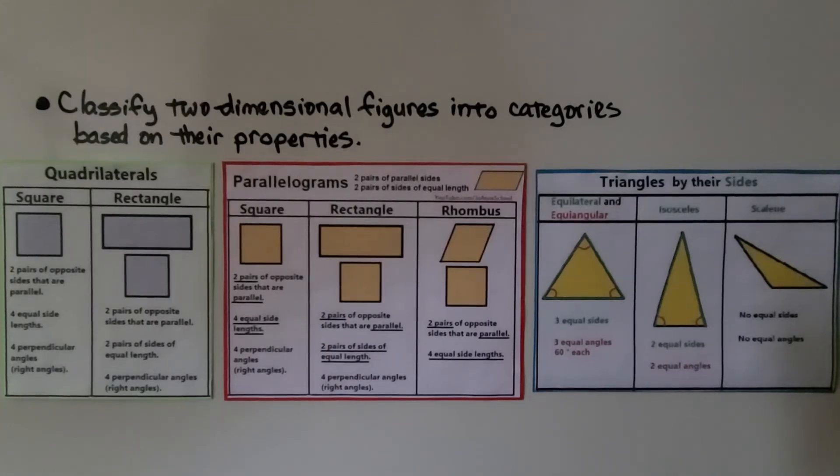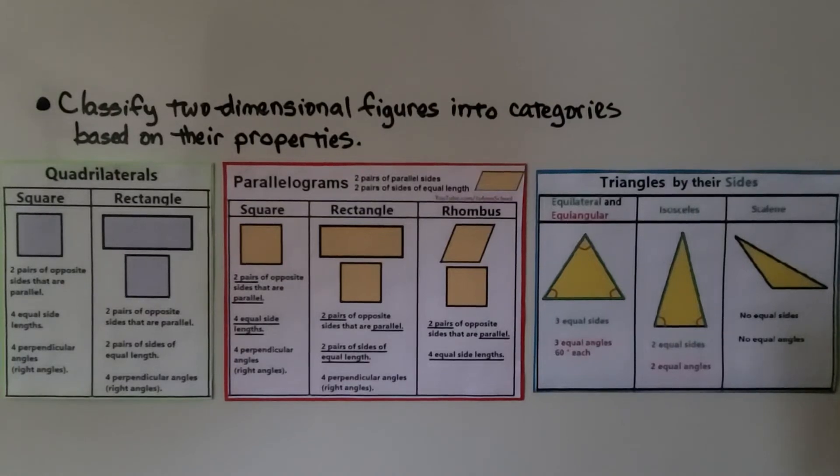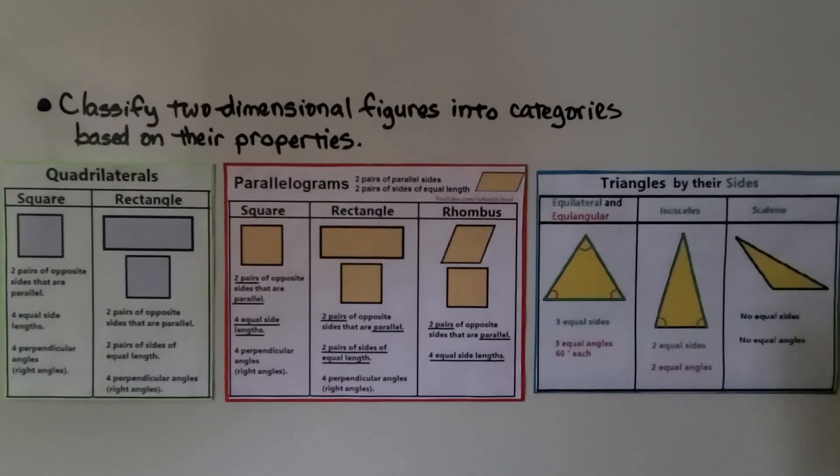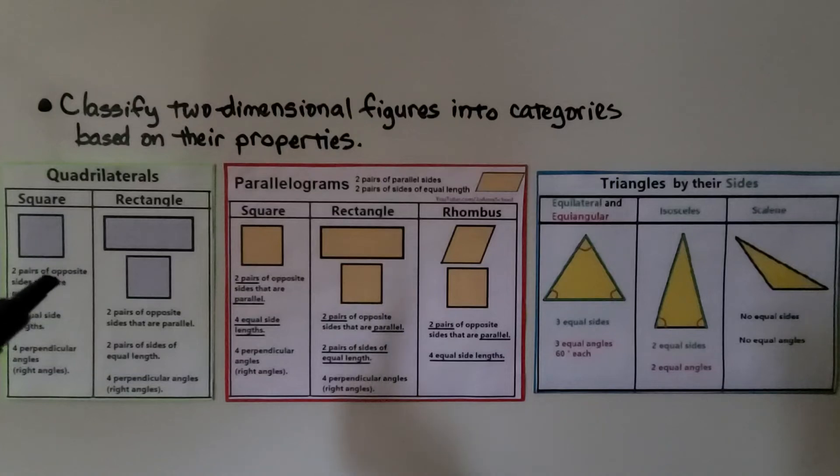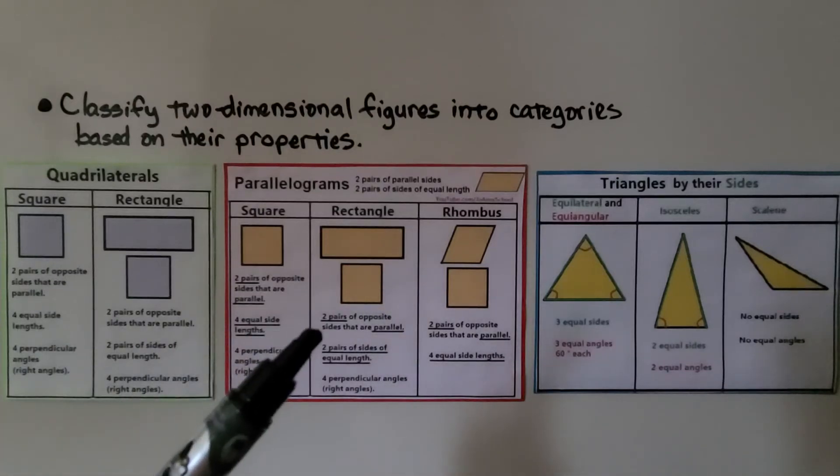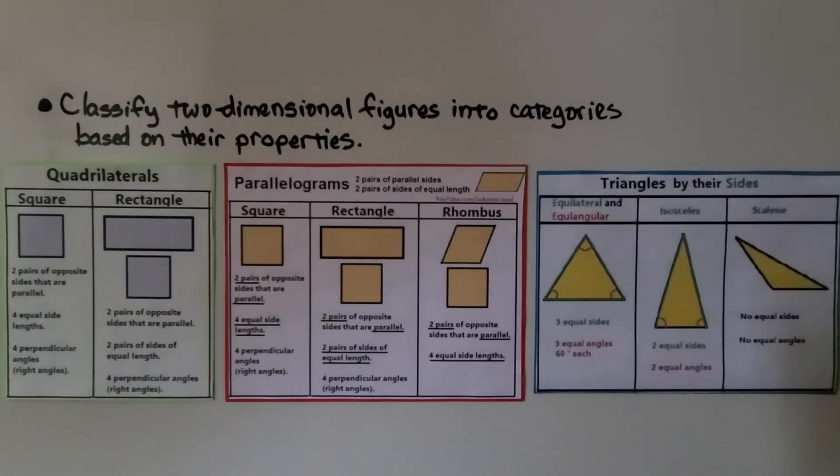Can you classify two-dimensional figures into categories based on their properties? Do you know the properties of quadrilaterals, parallelograms, or triangles? Can you recognize the different types of triangles?